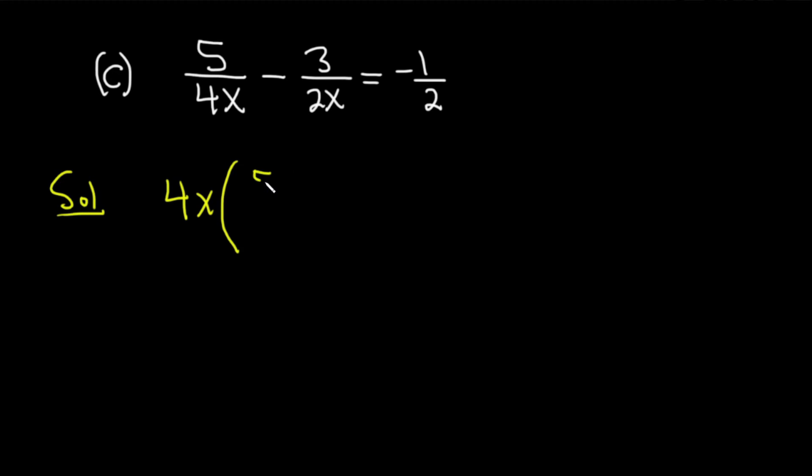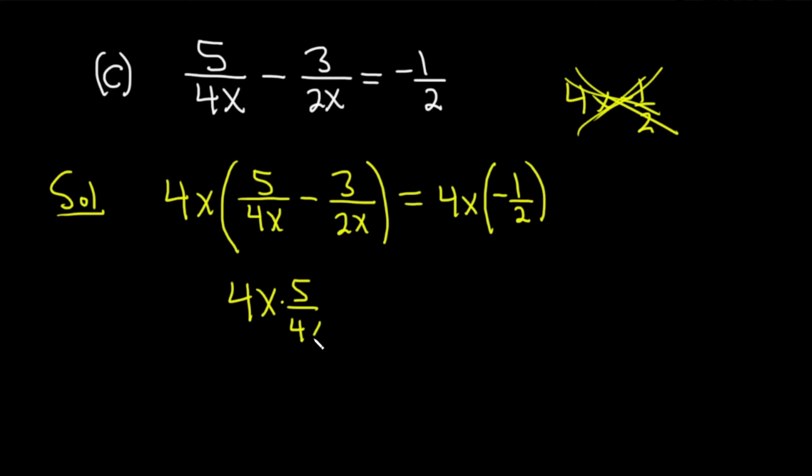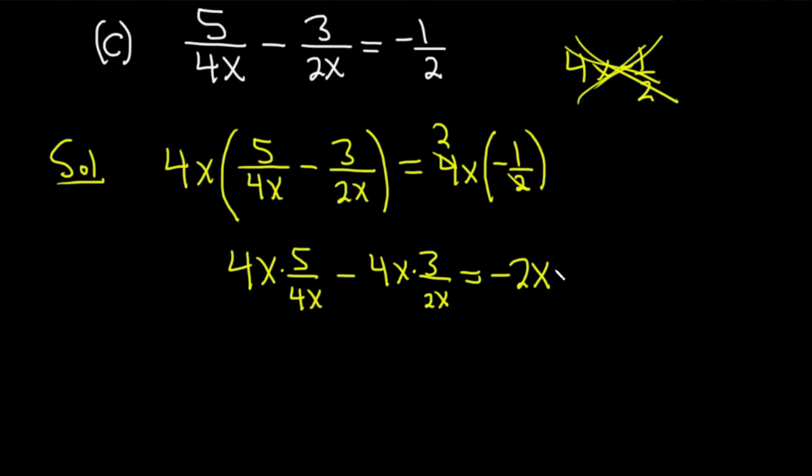4x(5/4x - 3/2x) = 4x(-1/2). This is a negative 1/2, so it's really important to put parentheses around it so there's no confusion. If you don't put parentheses, that can cause a lot of problems. Definitely put parentheses. I'm not going to skip any steps here. So (4x × 5/4x) - (4x × 3/2x) = 4x(-1/2). We can simplify: 2 goes into 4 twice, so we're just left with -2x on the right.